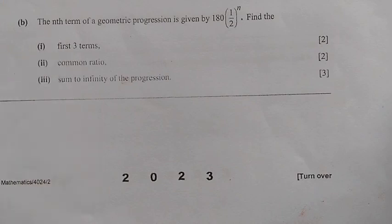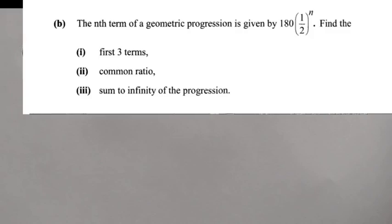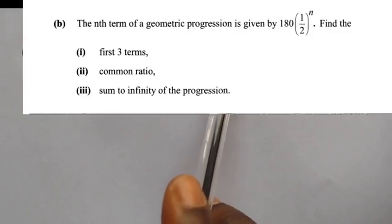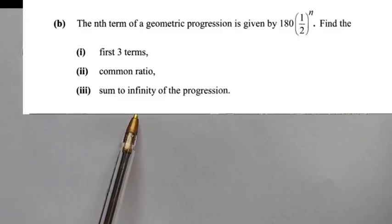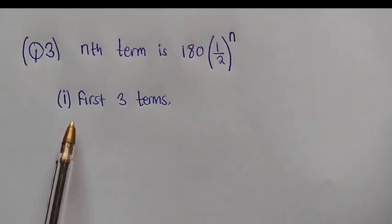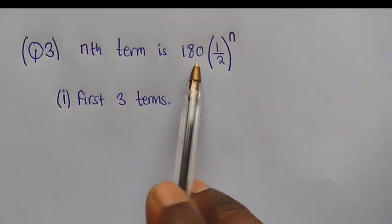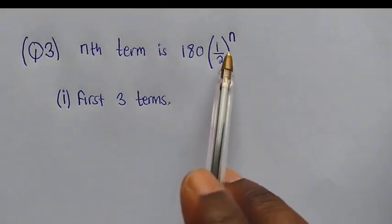Let's see how we can answer it. So the question reads: the nth term of a geometric progression is given by 180 times (1/2) to the power n. Find the — so part A, they want us to find the first three terms. So we need to take note of this nth term that we have been given: 180 in brackets, (1/2) raised to the power of n.